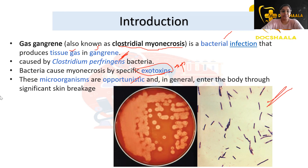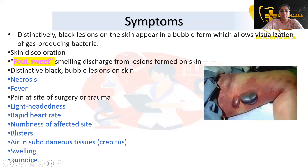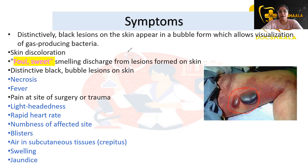Let's see what symptoms the patient presents with. As you can see in the image, there is discoloration and bubble lesions with black color lesions. Distinctive purple-black color lesions are found which exhibit gas-producing bacteria. Skin discoloration is seen and the smell of the lesion will be foul and sweet-smelling, and necrosis is present.